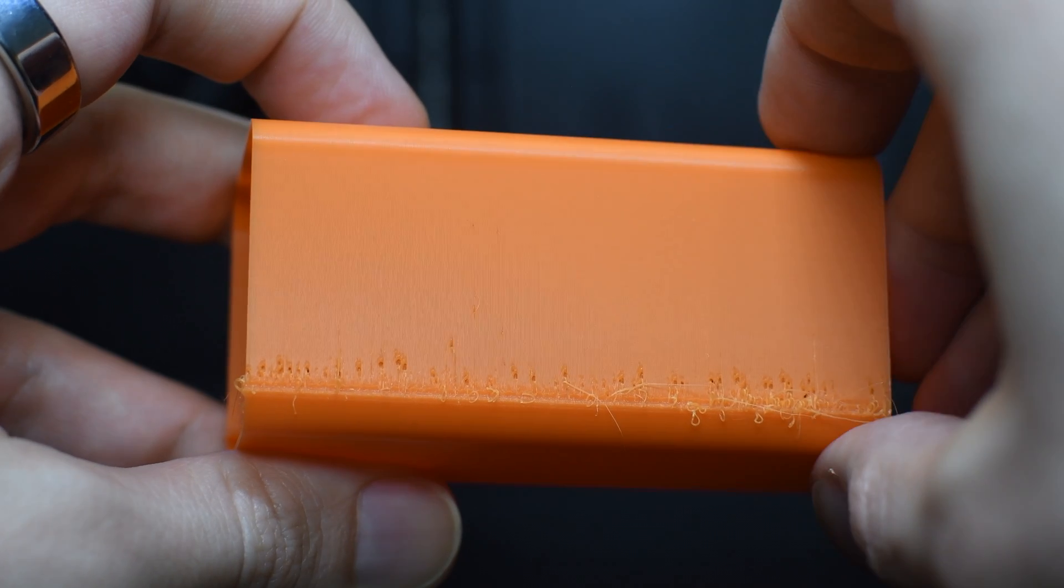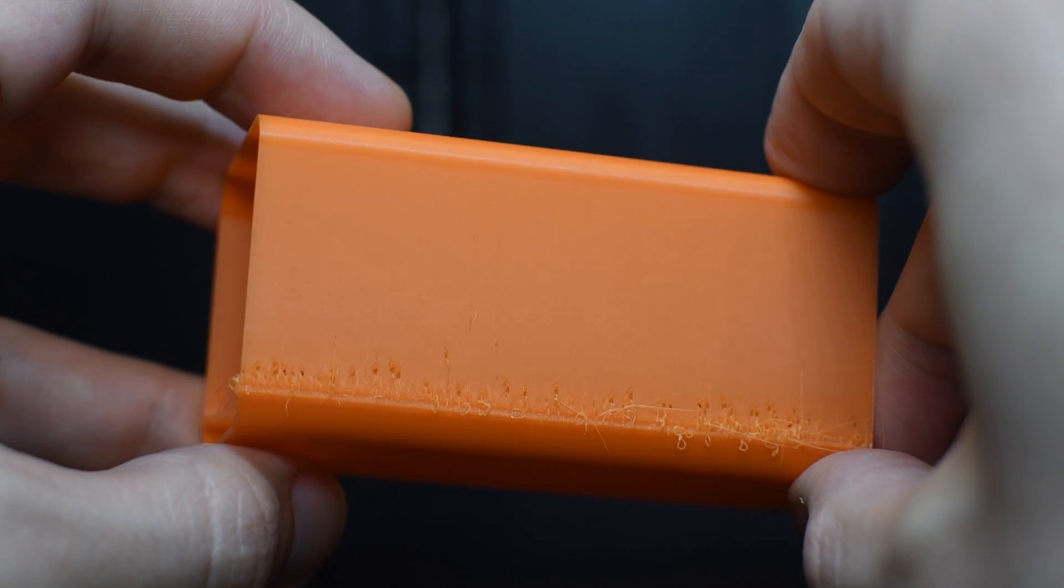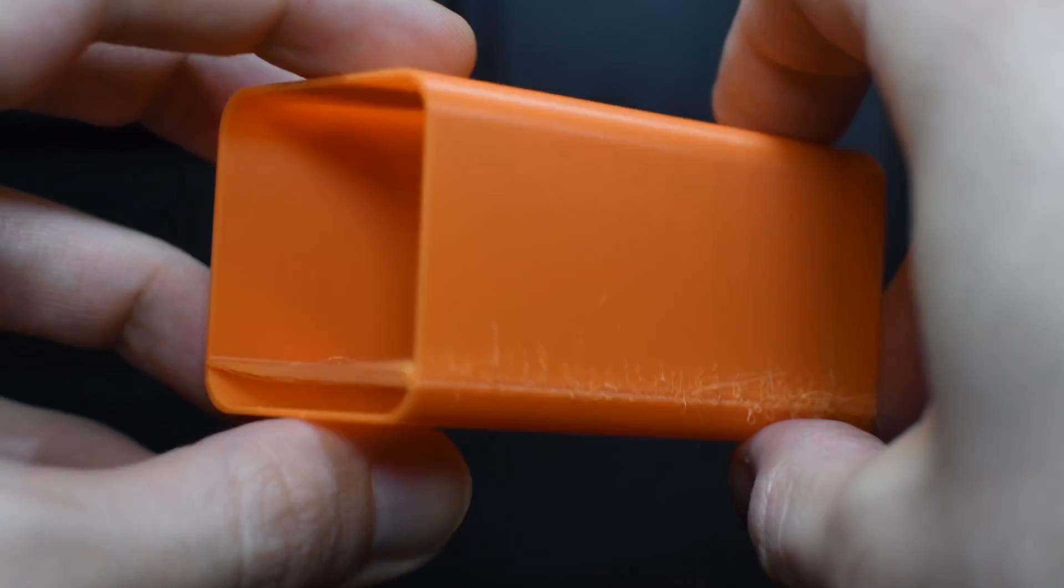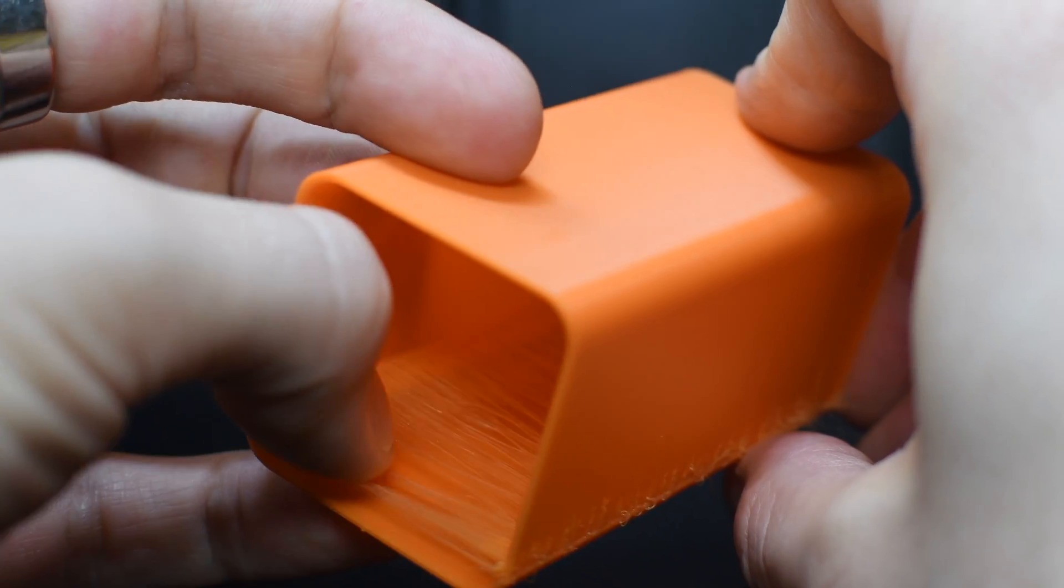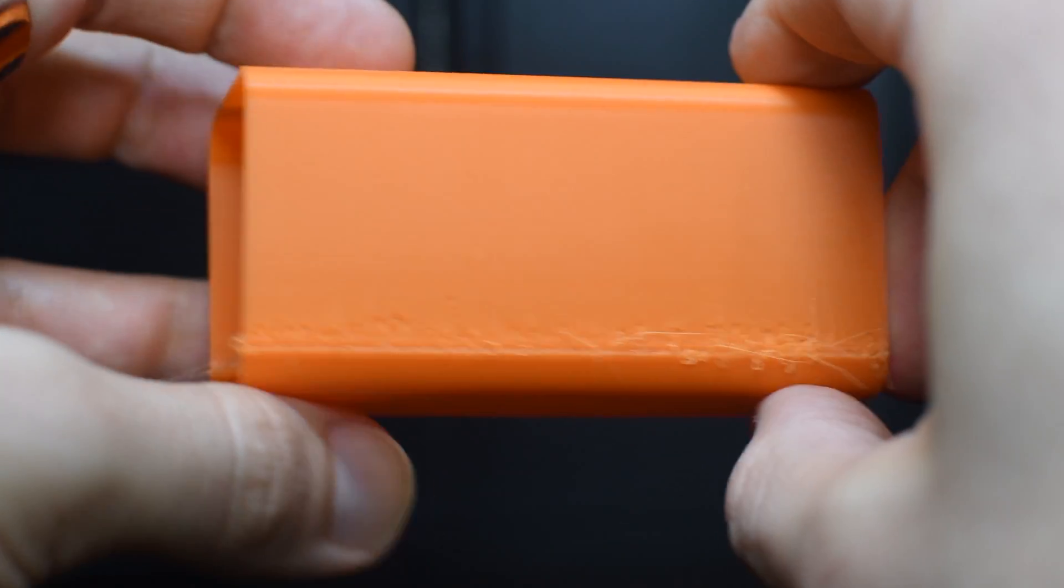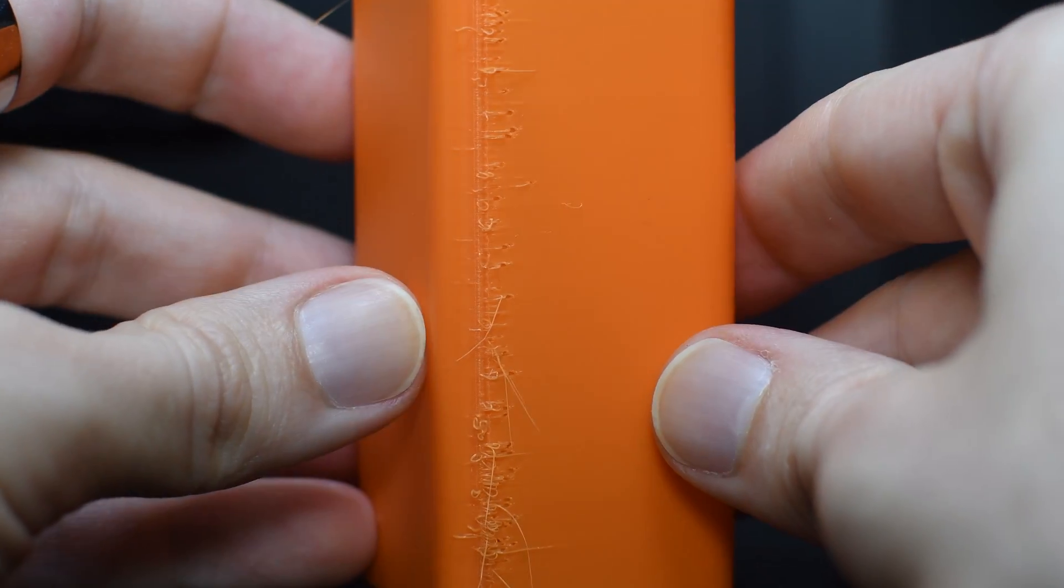If the print settings are not optimal it is usually not only the seam that will look bad. Stringing is one of the first printing errors to show up with incorrect temperatures and retraction settings. In extreme cases the seam will look like a bumpy scar.